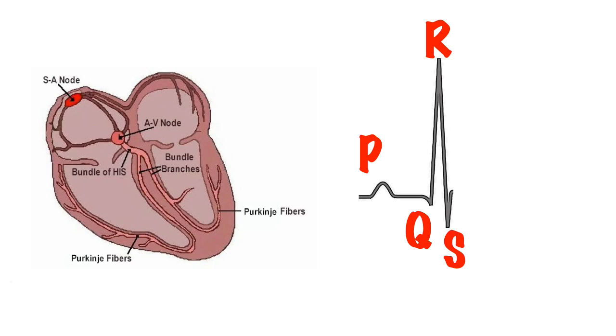Because the cells have depolarised, they need to repolarise before the next impulse. Ventricular repolarisation causes the T wave on an ECG. Atrial repolarisation is hidden by the much larger QRS complexes.